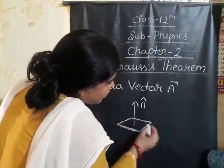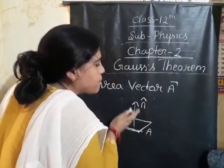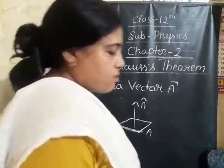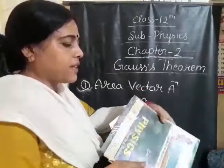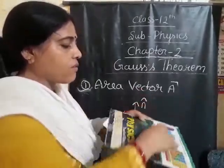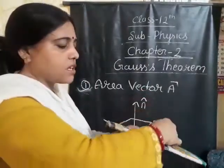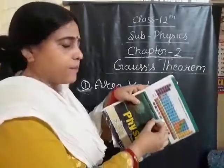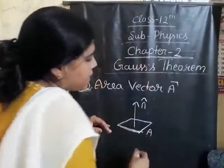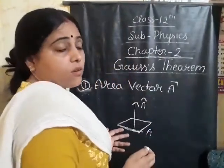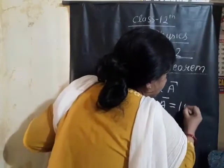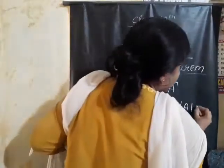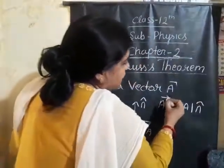The direction of the area vector is always perpendicular to the surface. Since area as a vector has both magnitude and direction, we define that the magnitude is the area of the surface and the direction is that of its normal — perpendicular to the surface. This is the area vector defined.